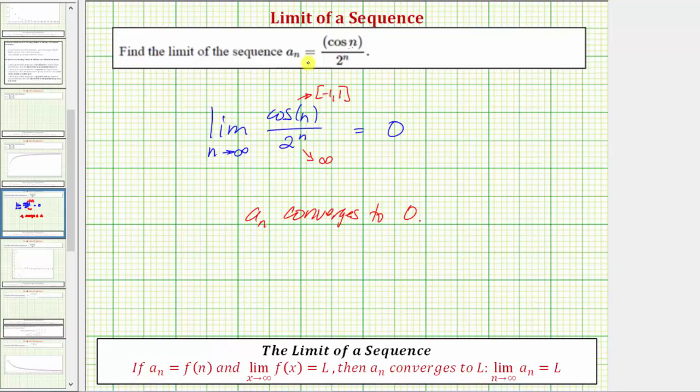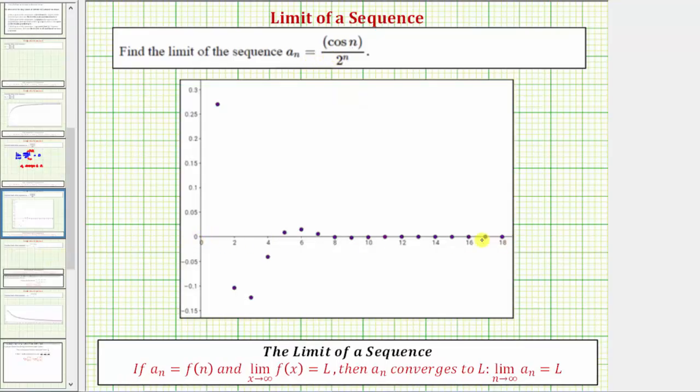To verify this, let's look at the graph of the sequence a sub n. So we have n along the horizontal axis and a sub n along the vertical axis. And notice how as we generate more and more terms in the sequence, the value of the terms do approach zero from both the positive side and the negative side. So this graph does verify the sequence does converge to zero.